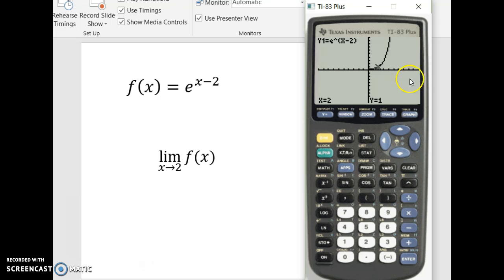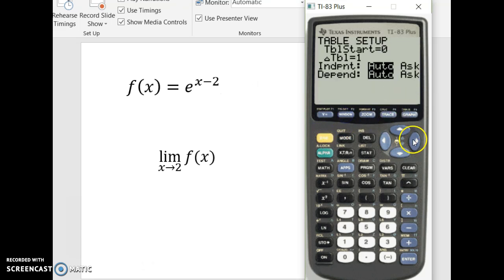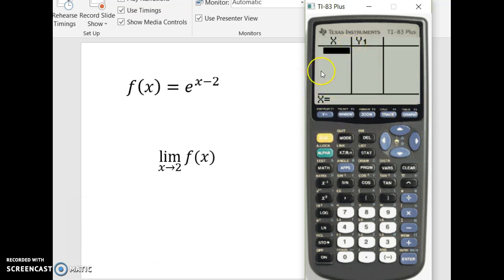But I wanted to show you how you can use your table to see this as well. So I'm going to go to table set and change the independent variable, the x, from auto to ask. So that when I go to the table, it's kind of blank. It's saying, well, what kind of number do you want for x?